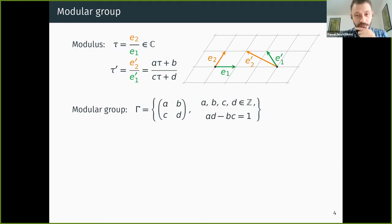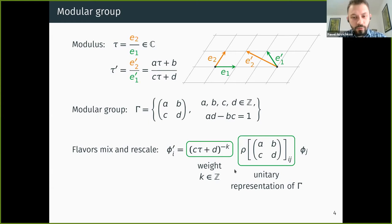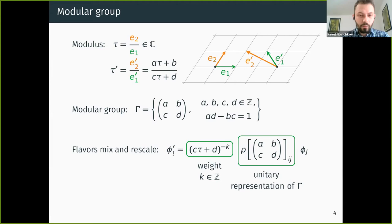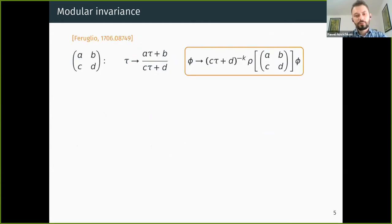Despite its fancy name, the modular group is just a group of two-by-two matrices with integer entries and unit determinant — simply a change of basis on the grid. Other fields in the theory also transform under these transformations: they mix via a unitary representation of the modular group, but there is also an extra pre-factor depending on τ and an integer number k called the modular weight. This shows fields transform non-linearly. The idea is to identify this symmetry with flavor symmetry, so the index i enumerates different generations.